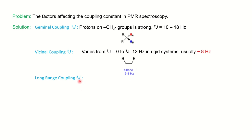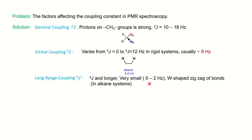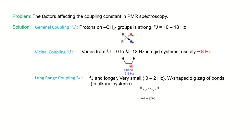Long-range coupling is usually 4J — four-bond coupling — and it is very small: 0 to 2 Hz. You can find a double-shaped, zigzag W-type pattern. In an alkene system, if you count the bonds, there are four bonds involved including the H–C bond. So it is called W-coupling or zigzag coupling. The coupling is weak because as the distance between the two protons increases, the strength of the coupling decreases. As the number of bonds increases, the coupling constant value decreases.